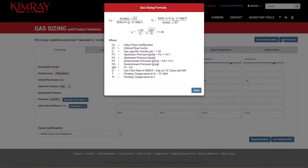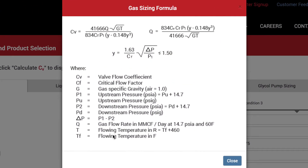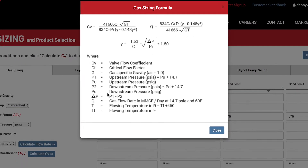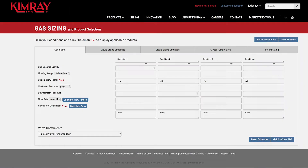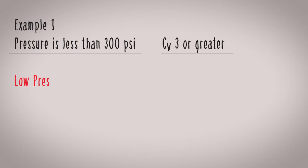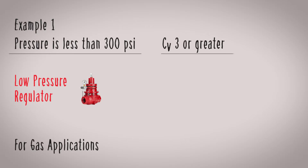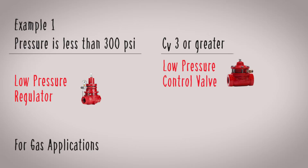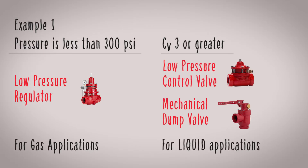To calculate your CV, you need to plug your conditions into the Kimray sizing calculator — we'll put a link in the description below. Let's look at two examples. In example 1, your pressure is less than 300 psi and your required CV is 3 or greater. In this case, a low pressure regulator should work for a gas application, while a low pressure control valve or a mechanical dump valve will work for a liquid application.